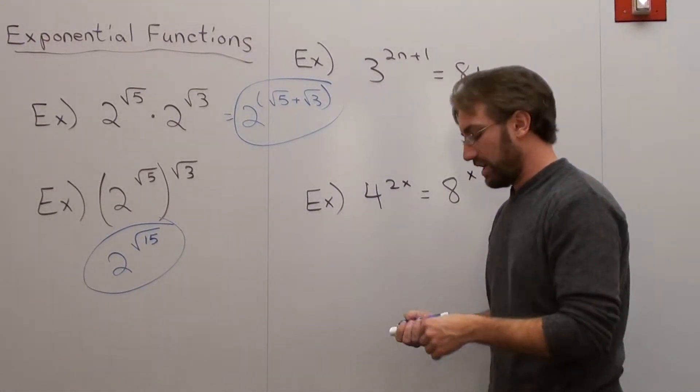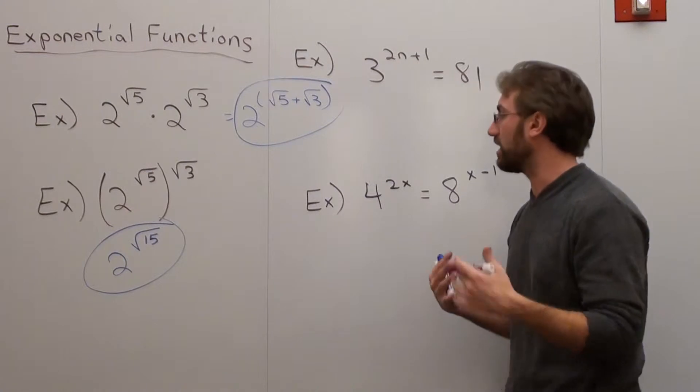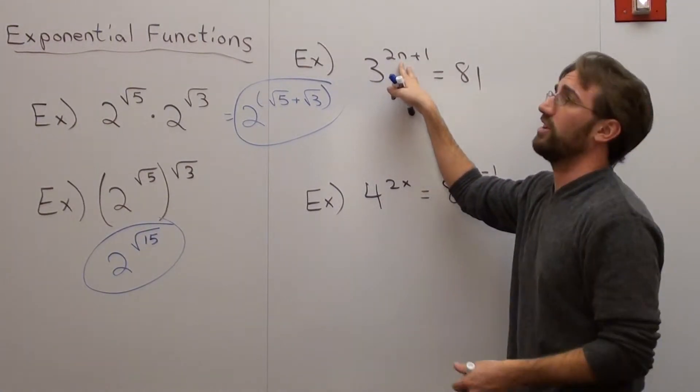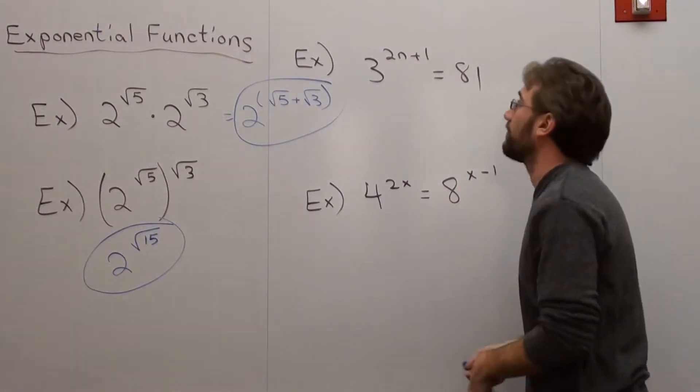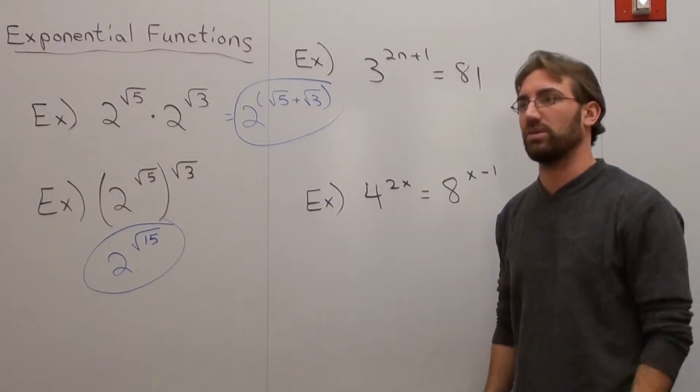There are ways to solve this that you're going to need to employ. You're going to need to understand these tactics. Basically what you're going to have to figure out is what the n is going to be in order to make this true. And actually I can probably guess already. 3 to what power equals 81? Well let's see.